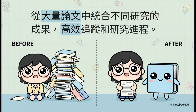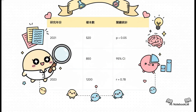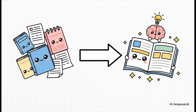对于学生还有研究人员来说，这绝对是超强大的工具。当你在读大量论文、需要统合不同研究的成果时，这个功能就真的派上用场了。你可以直接要求它从好几篇论文里面抓出关键的数据，比方说研究的年份、样本数，还有最重要的统计结果，然后自动整理成一张清清楚楚的表格。以前手动整理这些文献回顾可能要花好几个小时，但现在几秒钟就搞定。